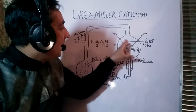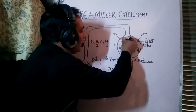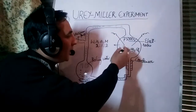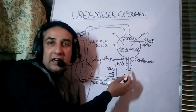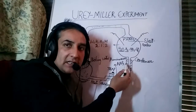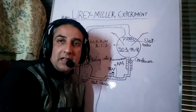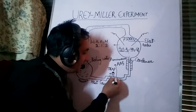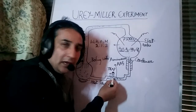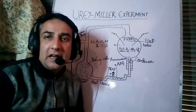The electrodes produce a voltage of about 75,000 volts, generating the electric discharge which passes through the mixture of gases. Then a condenser is adjusted — cold water flows through this condenser, and when the vapors pass through this area, they condense again. There is a trap where the mixture after condensation can be examined. You can take out the mixture through this outlet and examine its contents.